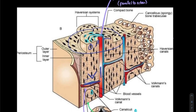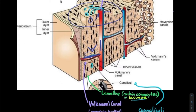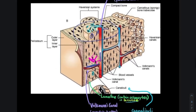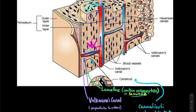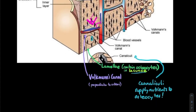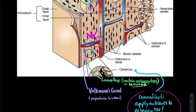We break off of the Haversian canals and go into Volkmann's canals. Volkmann's canals are perpendicular to Haversian canals — think of a little V with a 90-degree angle inside it, meaning 90 degrees off of the Haversian canals. These help break off traffic a little bit more, almost like an exit ramp off the interstate. The next level past Volkmann's canals are the canaliculi, which supply nutrients to our cells.